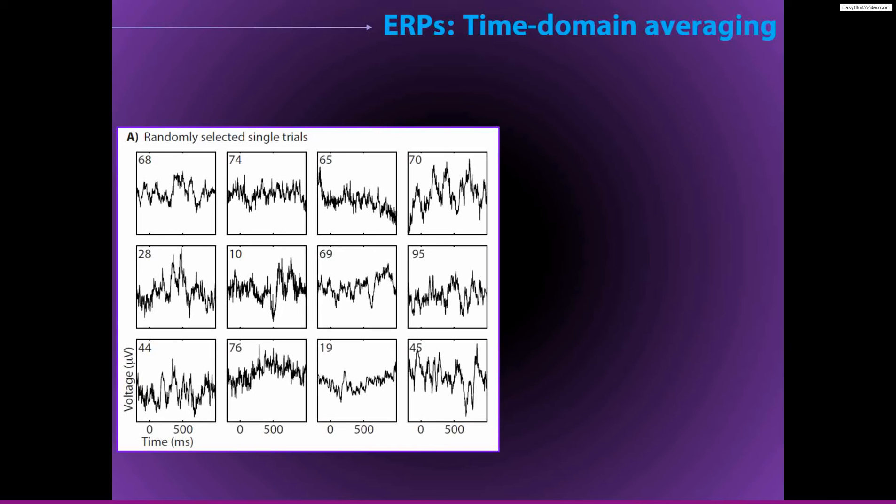You can see there is quite a bit of variability over different trials, but you can also see that there are some characteristics that appear to be similar over trials. In particular, you can probably detect that there are some kind of rhythmic or oscillatory features that seem to be taking place in many or perhaps all of these trials.